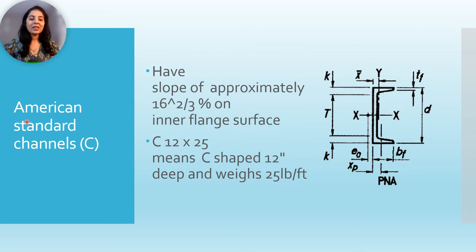Now we will see channels. American standard channel C. They have slope of approximately 16 to the power 2/3 percentage on inner flange surface. They are designated, for example, as C 12 by 25 - means C shape 12 inches deep and weighs 25 pounds per feet.